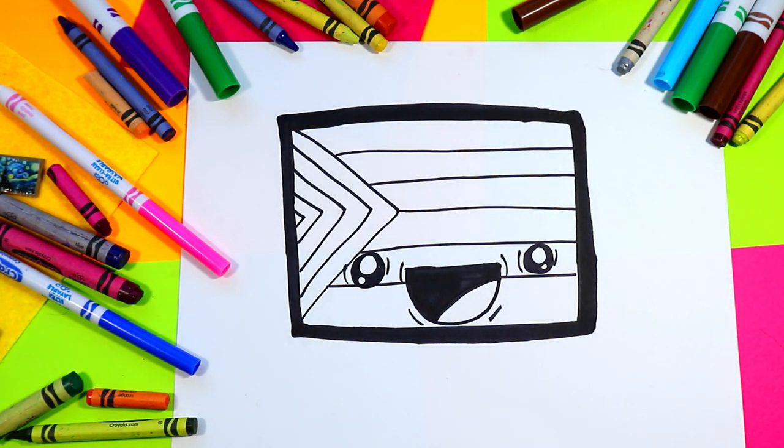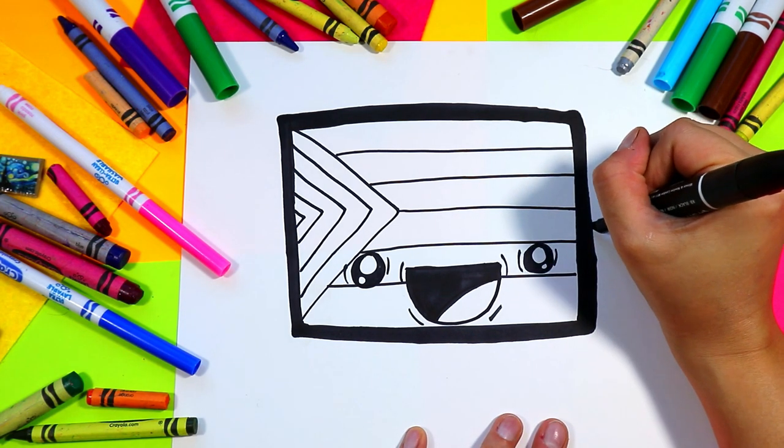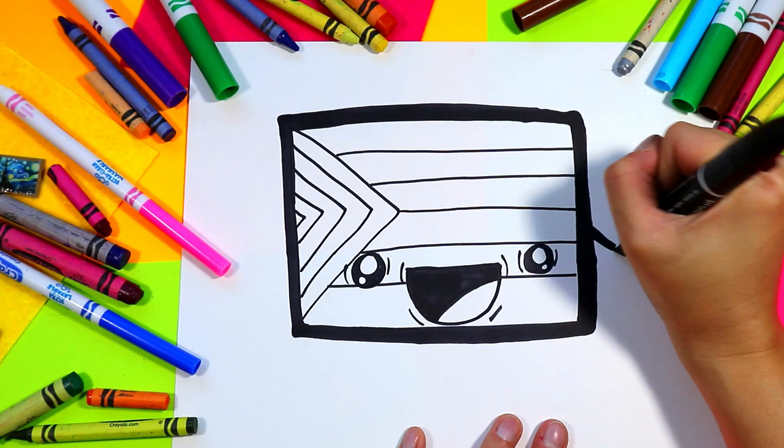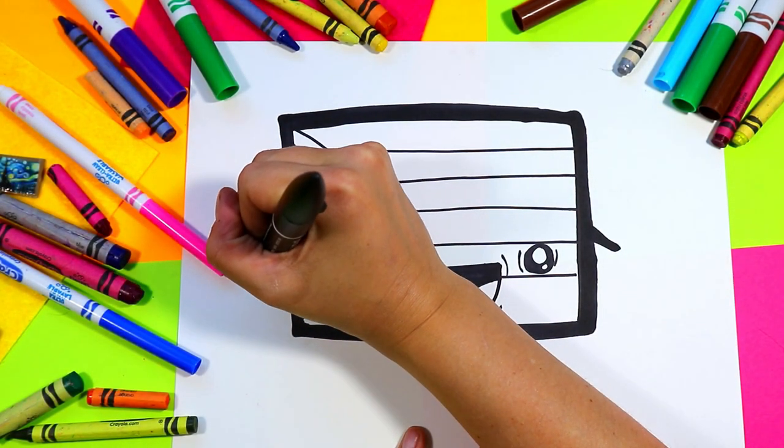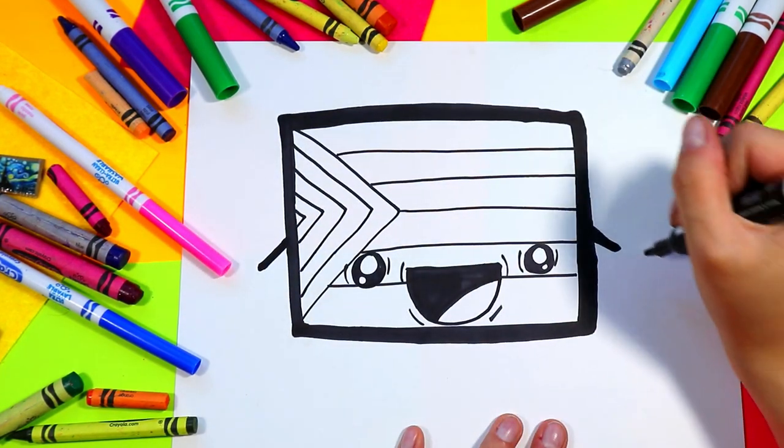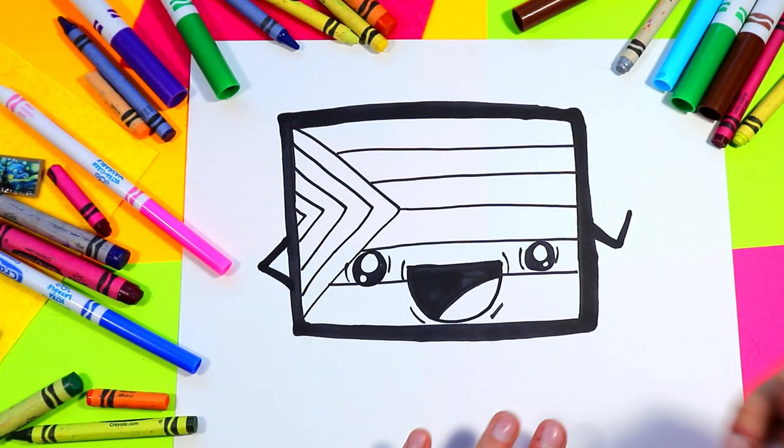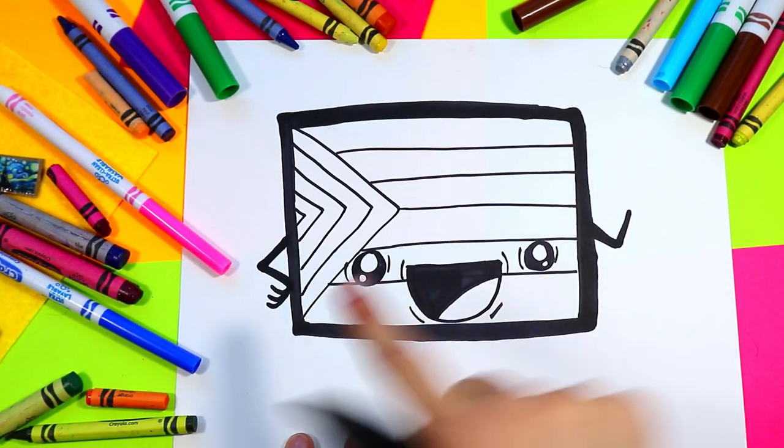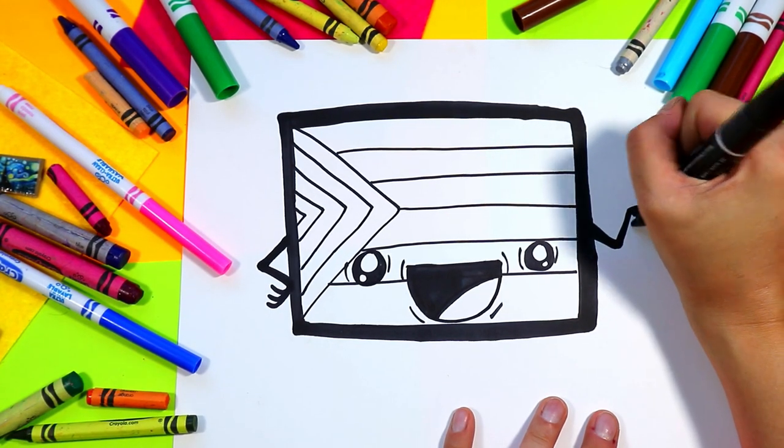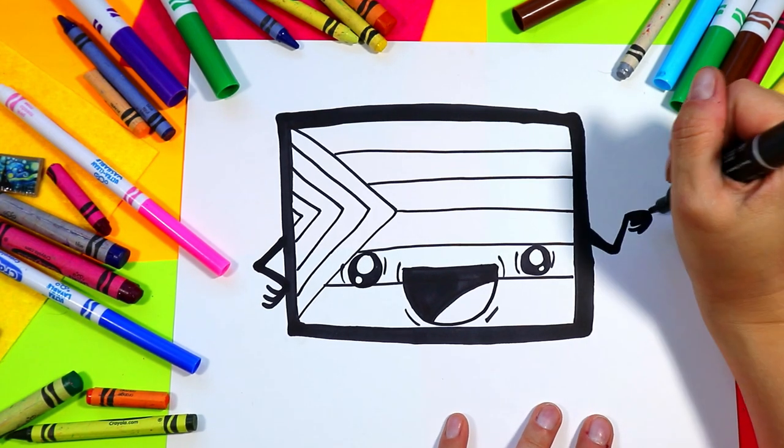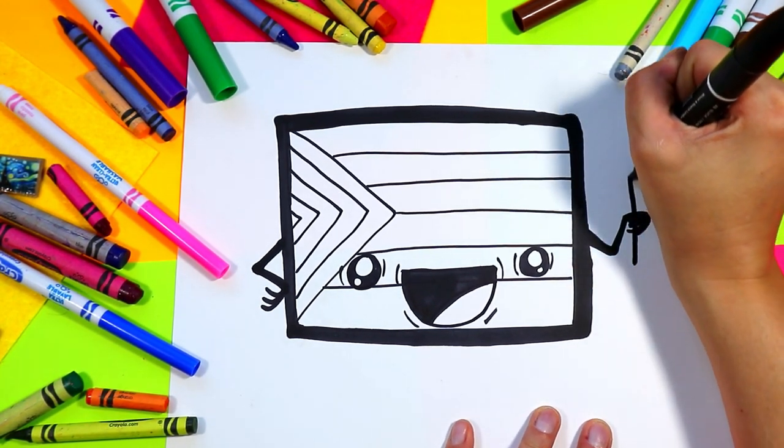Next we're gonna take our same marker and we're gonna draw little arms on our flag. So we're gonna draw two arms going down, one arm up, one arm in, little fingers curving out on this side. And then on this side we're actually gonna have the fingers wrapped down a bit because this flag is going to be holding a flag.